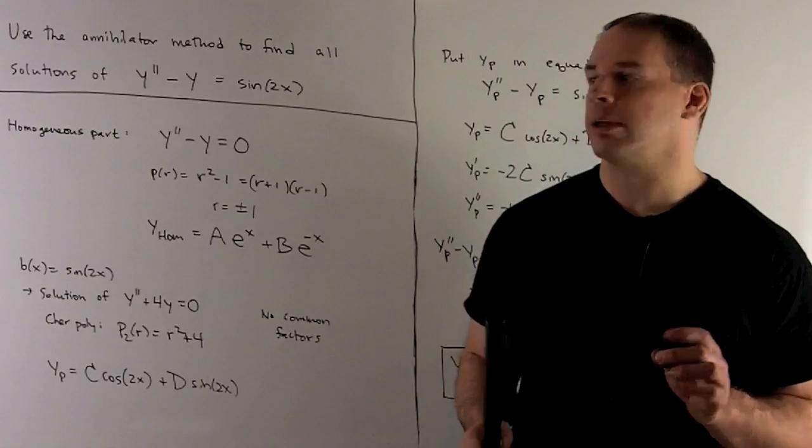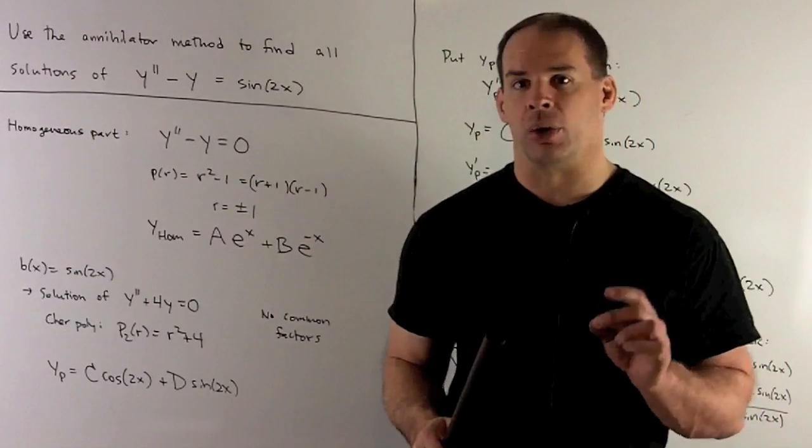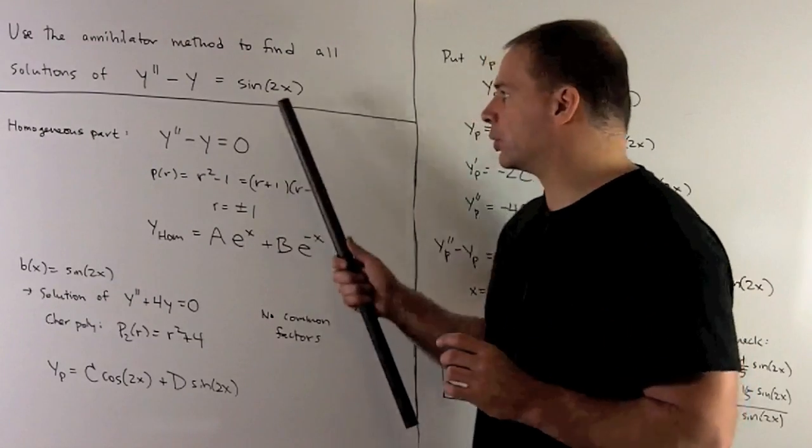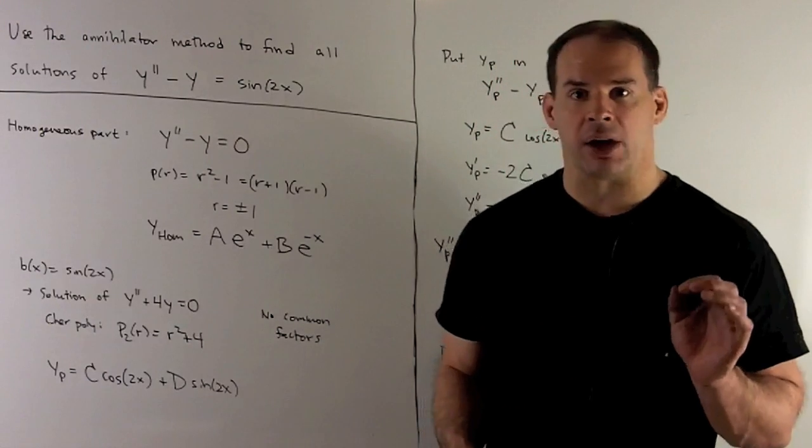Second thing we need to check, for sine of 2x, we want to know if that's a solution of a linear ODE with constant coefficients. So this is going to be a solution of y double prime plus 4y equals zero, so that's going to pan out also.